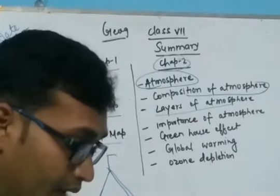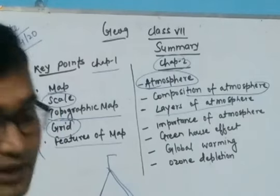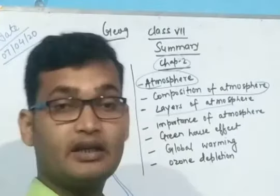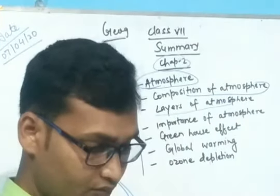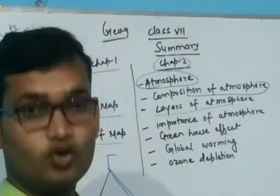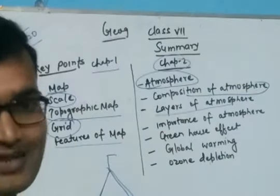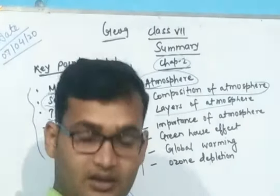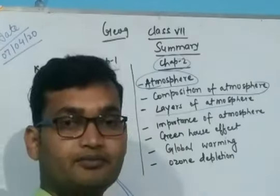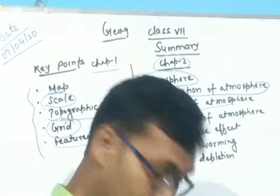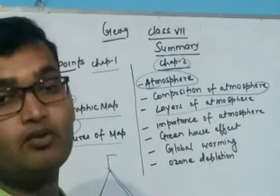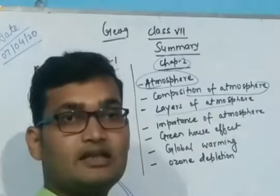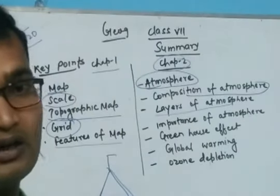There are five layers of the atmosphere. The lowest layer is the troposphere, which is about 18 kilometers above the earth's surface at the equator and about 8 kilometers at the poles. Every weather change occurs in this layer, and only life can exist here.